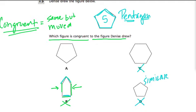C is not congruent or similar. Why? Because it's a different number of sides. It has one, two, three, four, five, six sides.